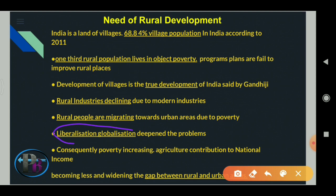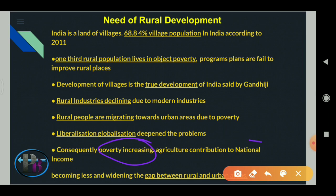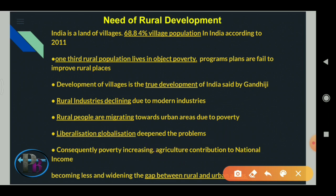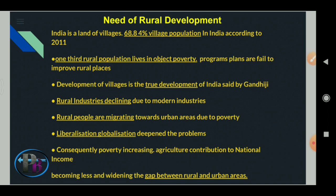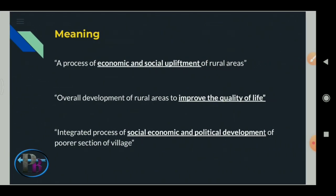Due to liberalization and globalization, it affects farmers a lot and deepens their problems - so rural development is a great need. Poverty is increasing, and agriculture's contribution to national income is decreasing because of failure of agriculture. This widens the gap between rural areas and urban areas, creating inequality between urban and rural areas.